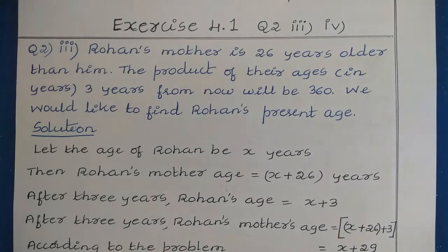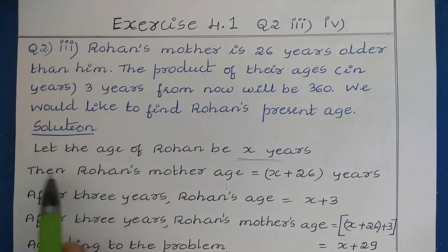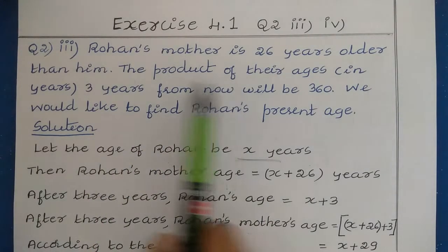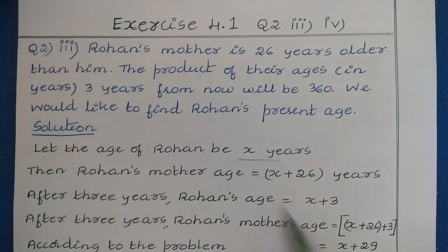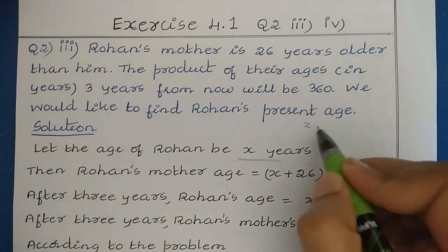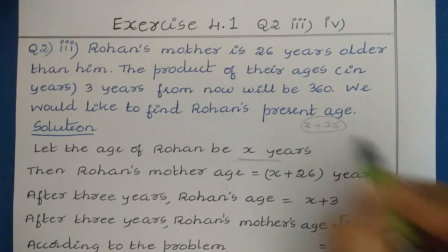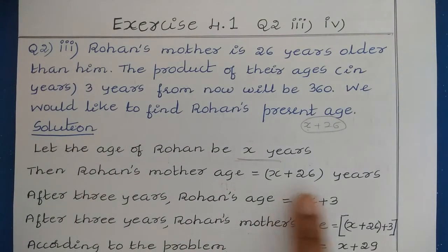They have asked us to find Rohan's present age, so we don't know that. Let the age of Rohan be x years. Rohan's mother is 26 years older than him, so for x we add 26. That gives Rohan's mother's age as x + 26 years.